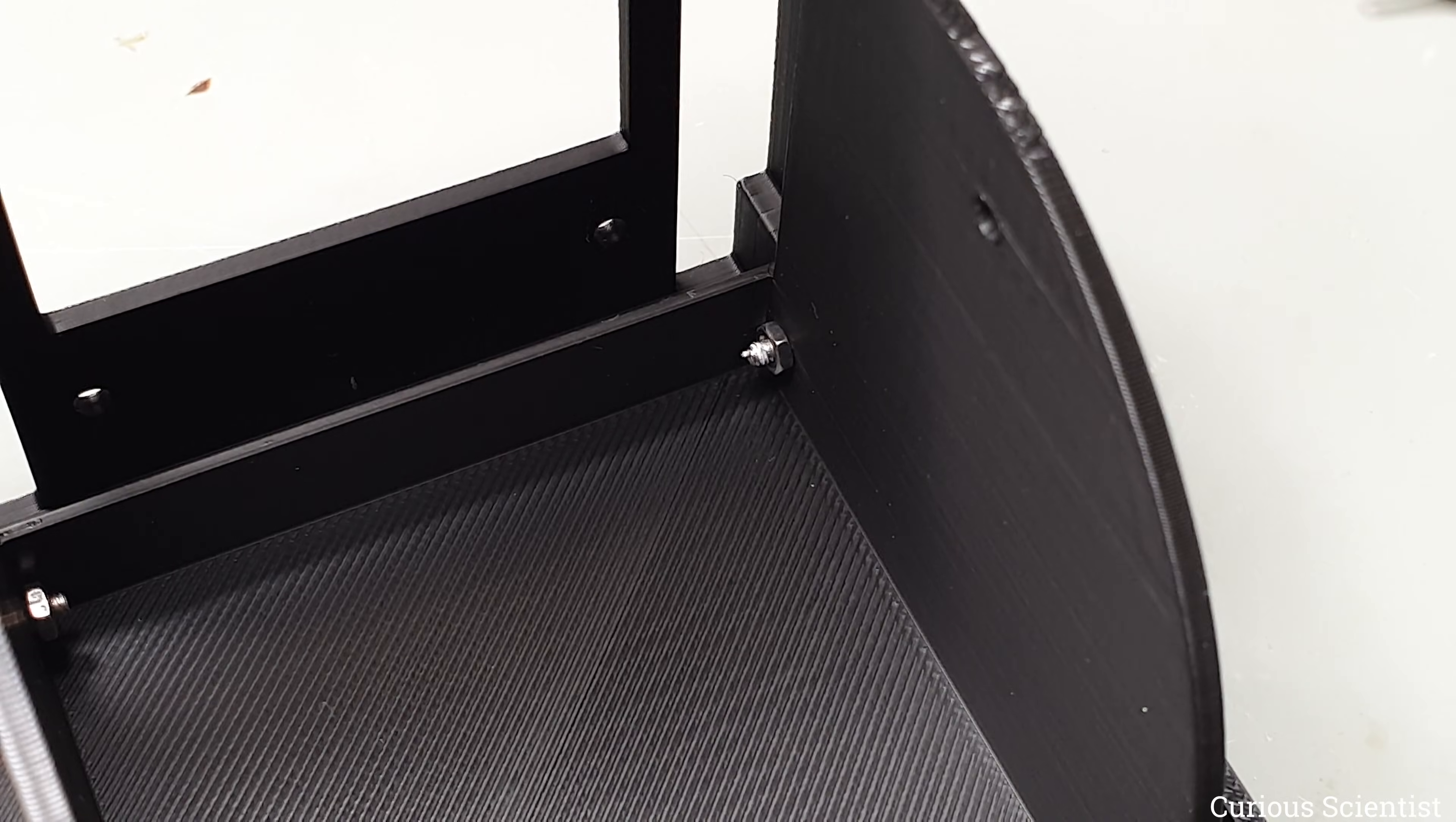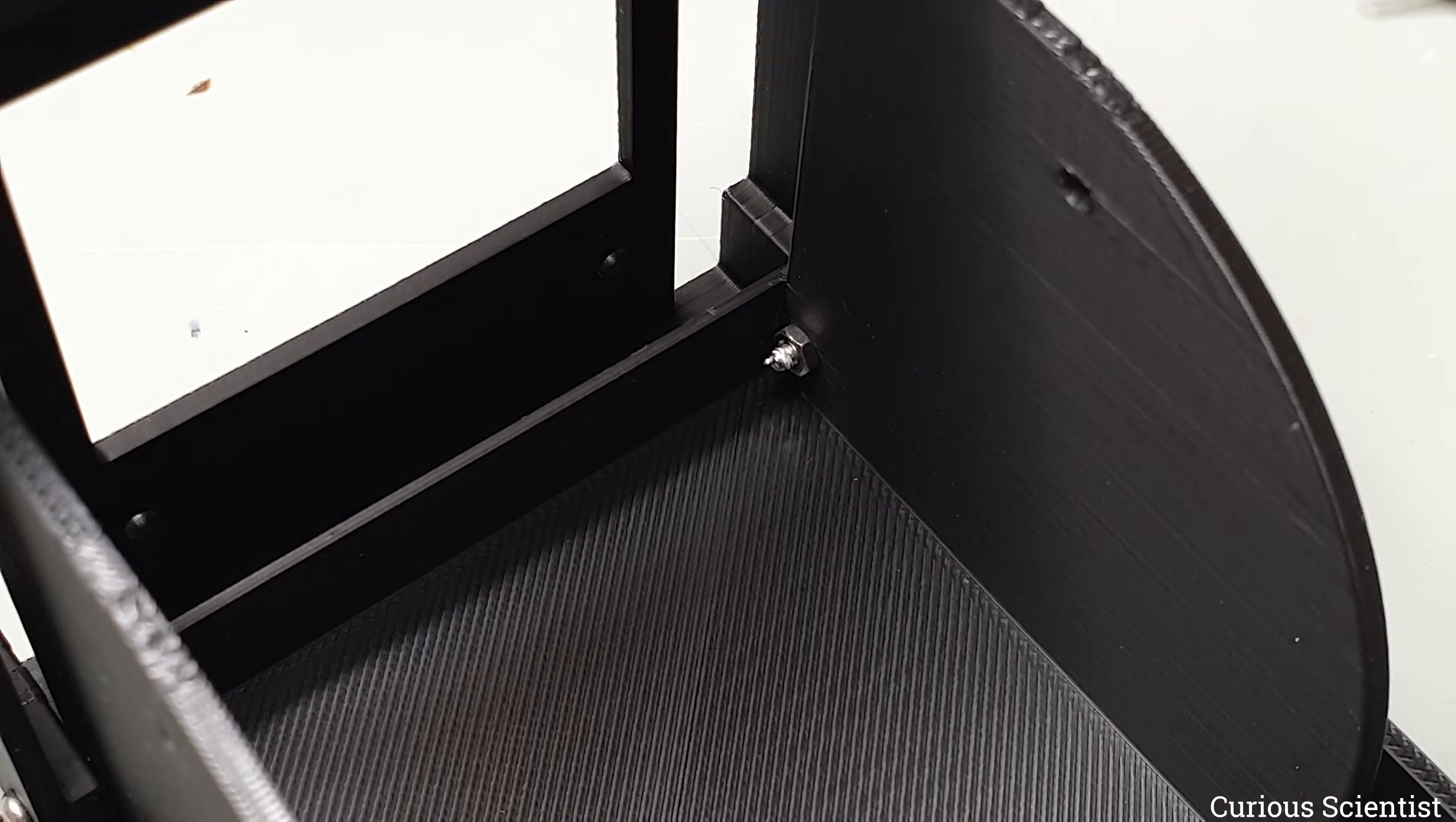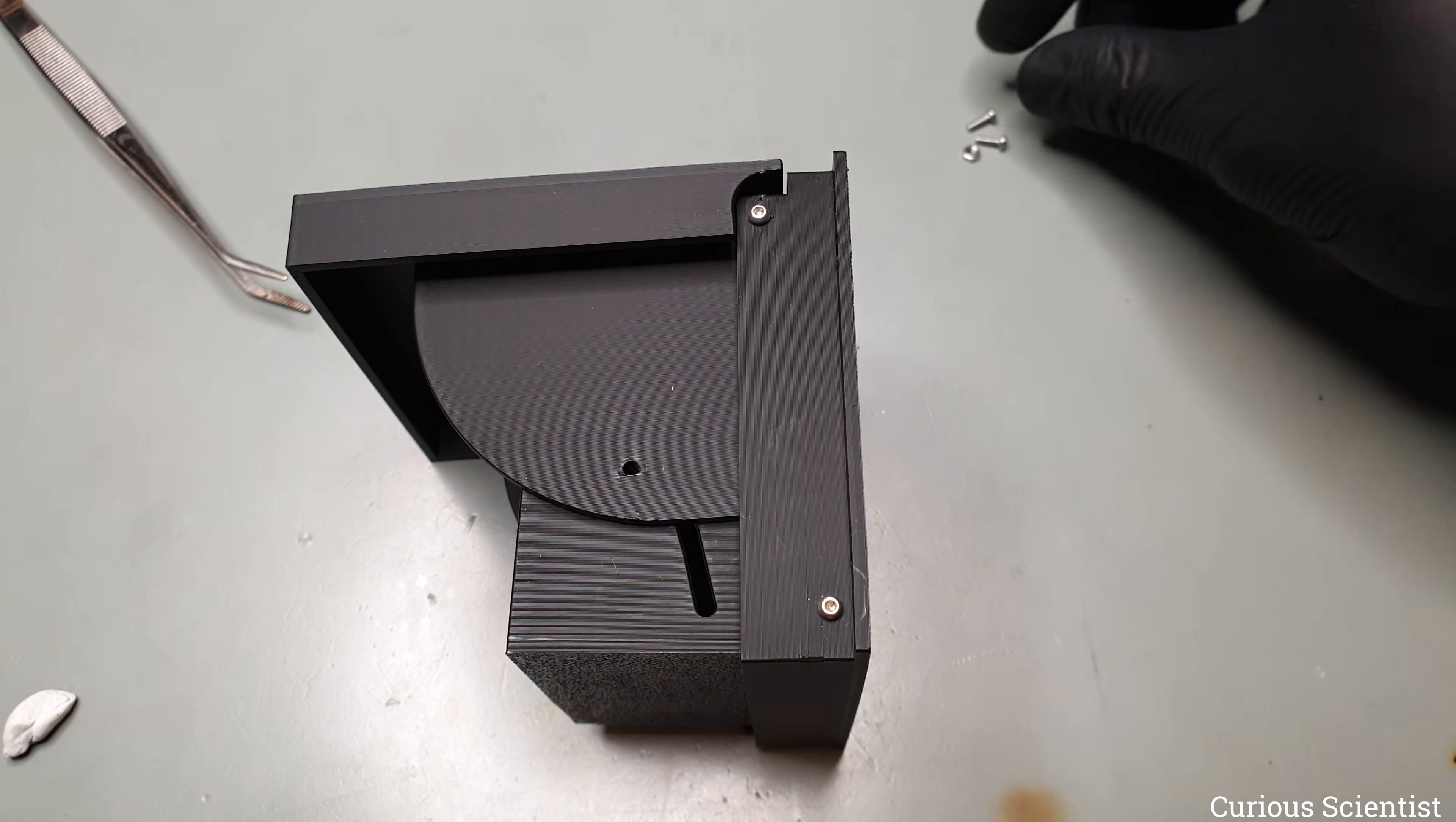Since all the screws moved back and forth, there's a chance that the nuts could loosen over time and fall off. To prevent that, I added a small drop of super glue to each nut. With a bit of force, I can still break the bond if needed, but under normal use, they stay locked in place.